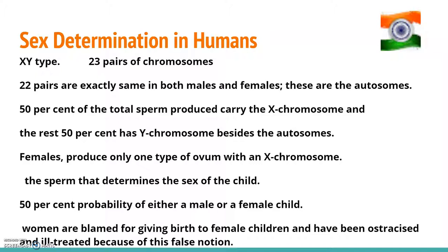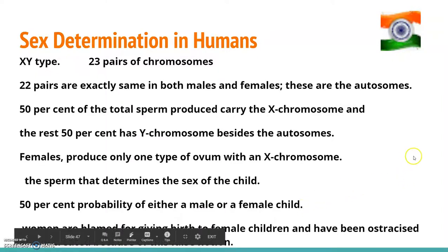In birds, the sex determination mechanism is different. It is the egg, not the sperm, that is responsible for the sex of the chicks — because in birds it is female heterogamety.